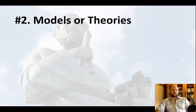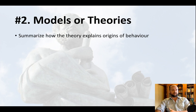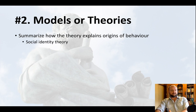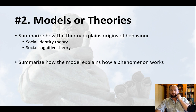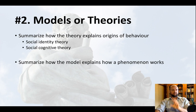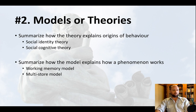Models or theories is another type you might get. You are going to have to summarize how the theory explains the origin of a particular behavior — like social identity theory and how it explains inter-group conflict, or how social cognitive theory explains behavior. If you are given a model, a model explains how a phenomenon works — the processes or steps in a particular behavior — and you need to summarize that. For example, the working memory model or the multi-store model. An exam question could be: discuss social identity theory.